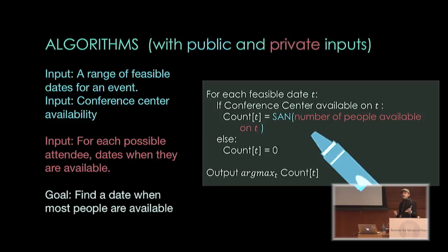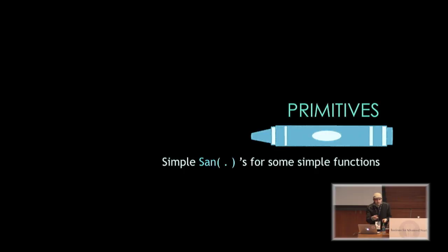In general, to design a differentially private algorithm, we write it down, figure out which steps access private data, and make sure that each access to private data is covered by a sanitizer — either at an individual level or at a more aggregate level. Let me tell you about some simple sanitization algorithms, some primitives, which can sanitize simple accesses to data.